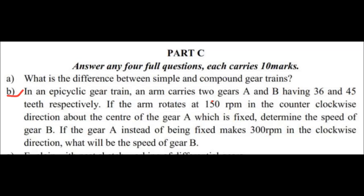This is a two-part question involving two gears. Gear A has 36 teeth and gear B has 45 teeth. That means gear A is smaller than gear B.